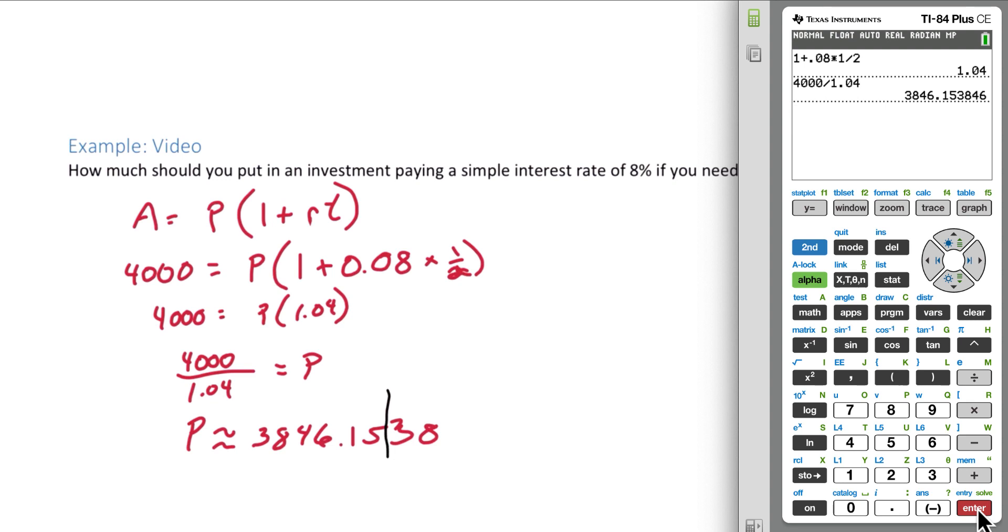And whenever you're finding principal, you want to round up. Even though the normal rounding rules tell us to round down here and chop it off at 15 cents, since we're looking for principal, we want to automatically round this up. So the principal that we need to invest is $3,846.16.